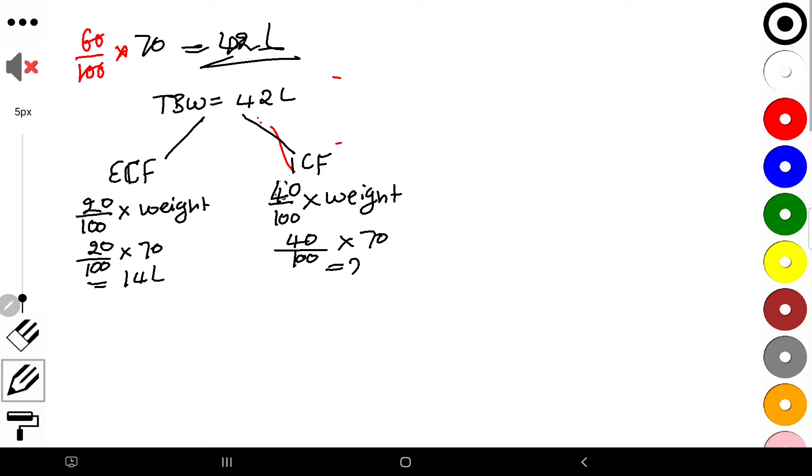So the ICF is about 14 liters and ECF is about 28 liters. But fraction-wise, you see that one-third of the total body water is ECF, whilst two-thirds of this total body water is actually intracellular. So one-third of 42 will give you 14, while two-thirds of 42 will give you 28 liters.